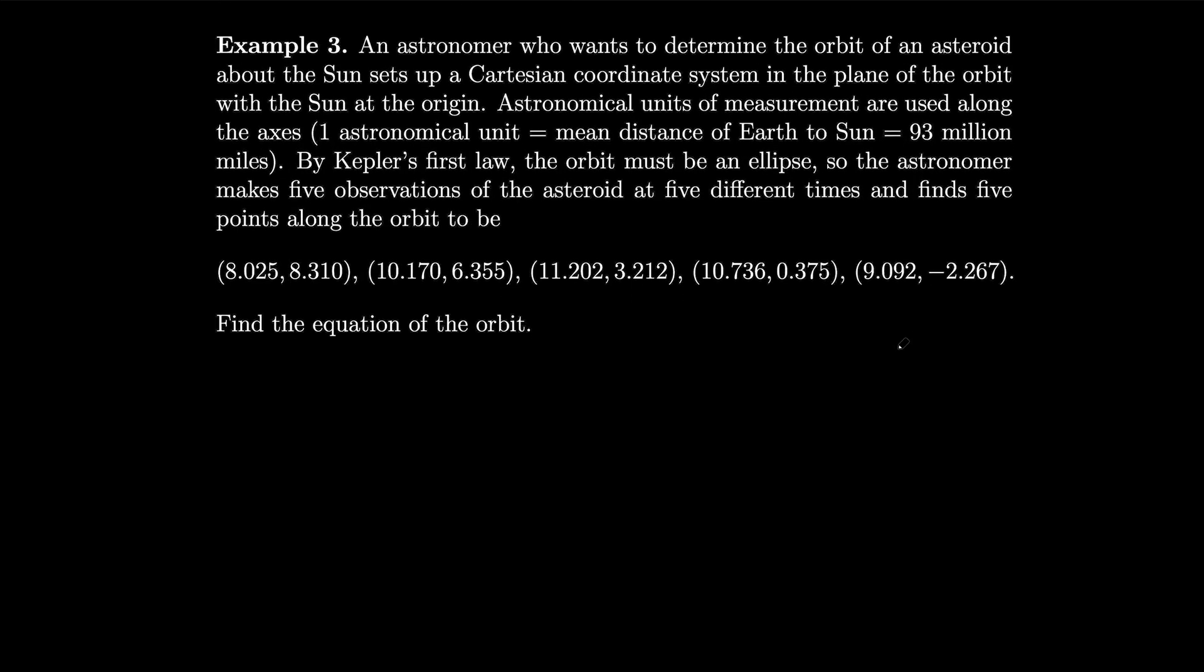They set up a Cartesian coordinate system in the plane of the orbit with the sun at the origin. Astronomical units of measurement are used along the axes, where one astronomical unit is equal to the mean distance of Earth to the sun, which is equal to 93 million miles. By Kepler's first law, the orbit must be an ellipse, so the astronomer makes five observations of the asteroid at five different times and finds five points along the orbit to be as listed. Let's find the equation of the orbit.